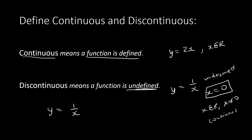Remember: discontinuous means undefined. Don't just memorize, because these things can differ. If they give us a function of square root of x, the moment x is less than zero this is undefined, but the moment x is greater than or equal to zero it is defined — because square root of zero is zero, it's not undefined. So undefined is discontinuous. If I have a negative number inside my square root it's discontinuous, but if it's zero or positive then it's continuous.